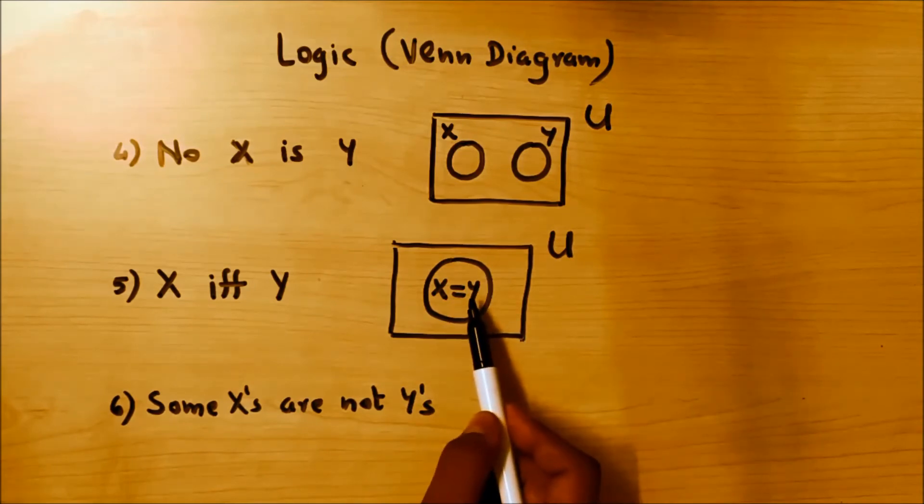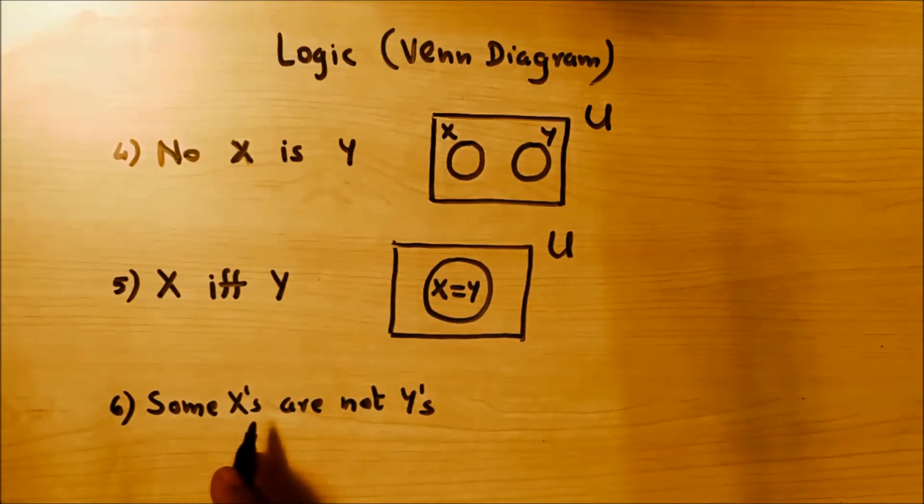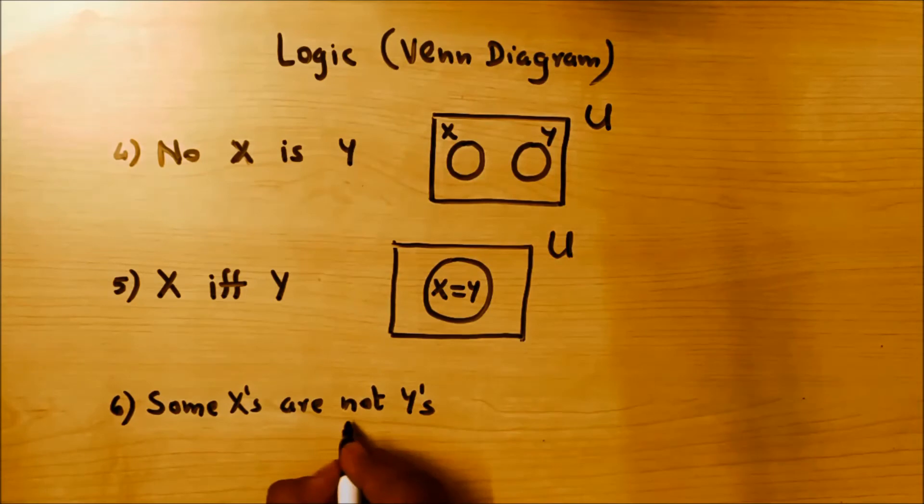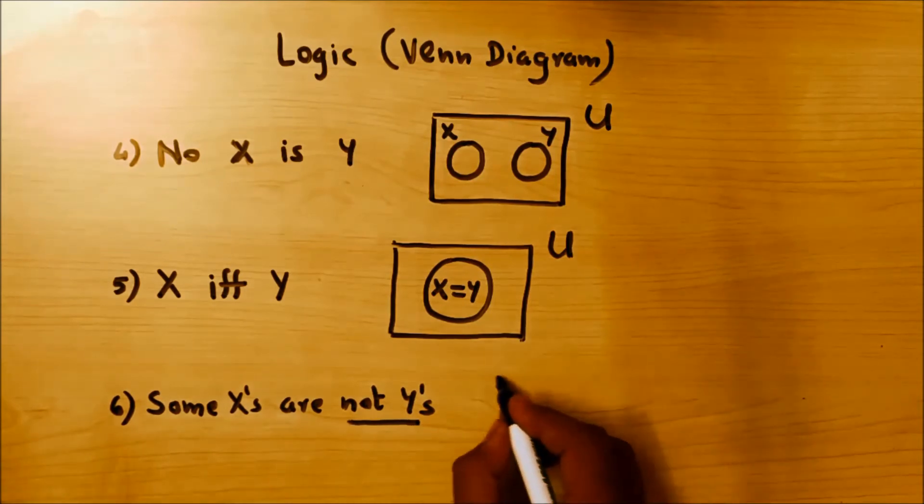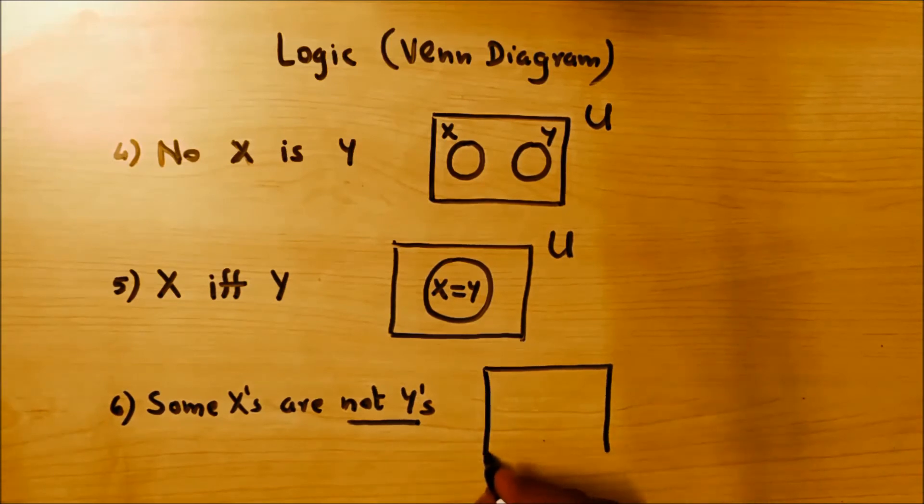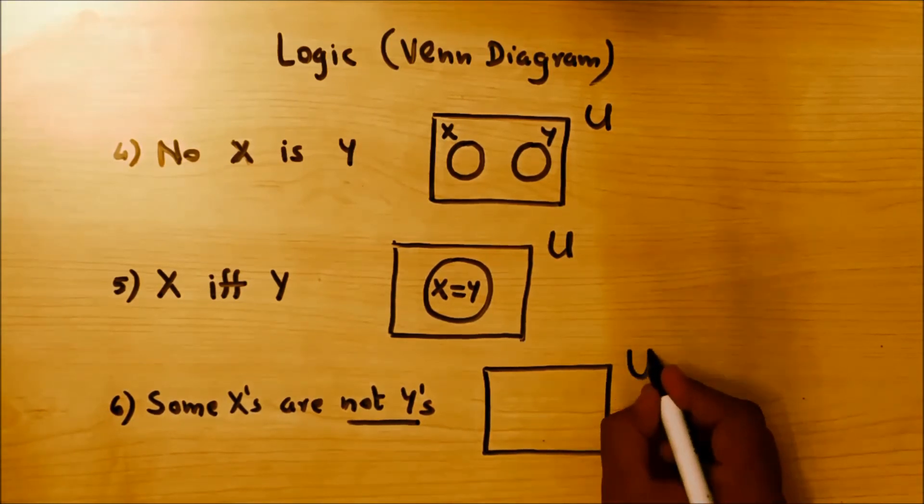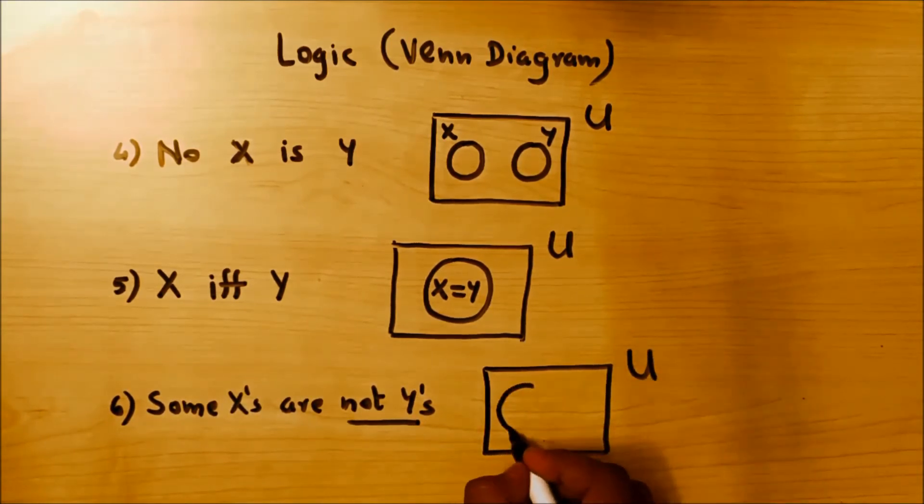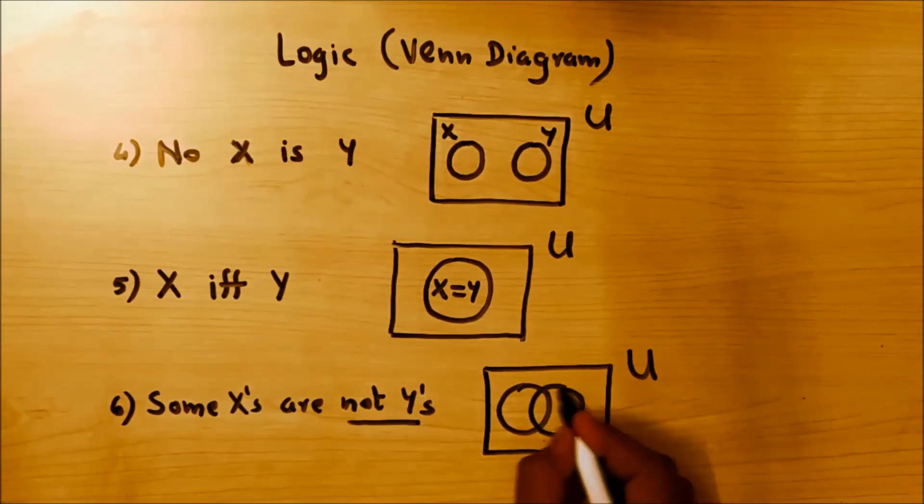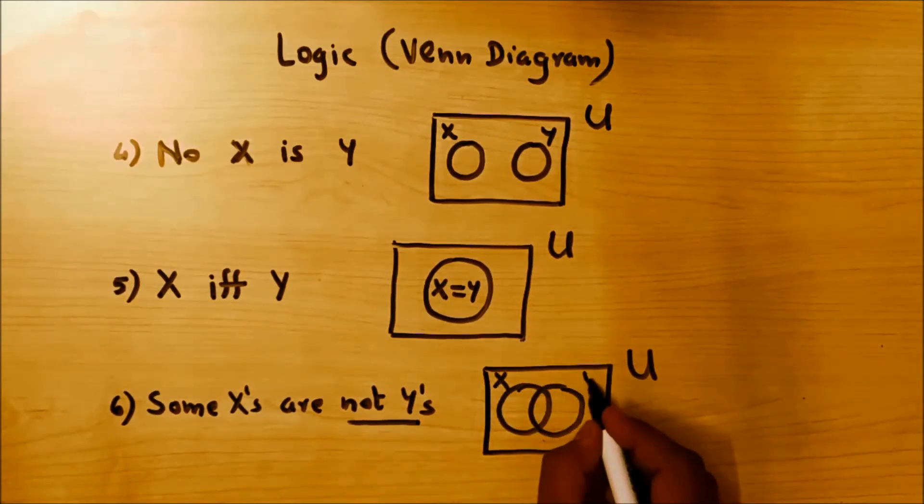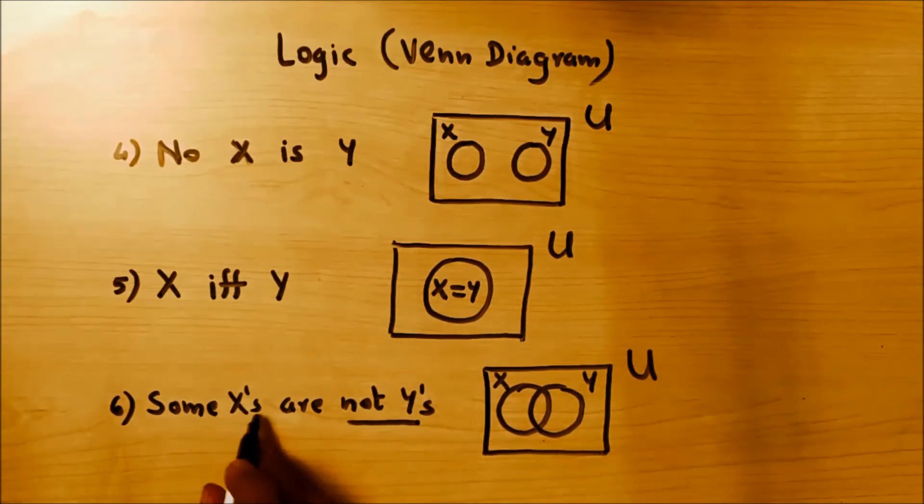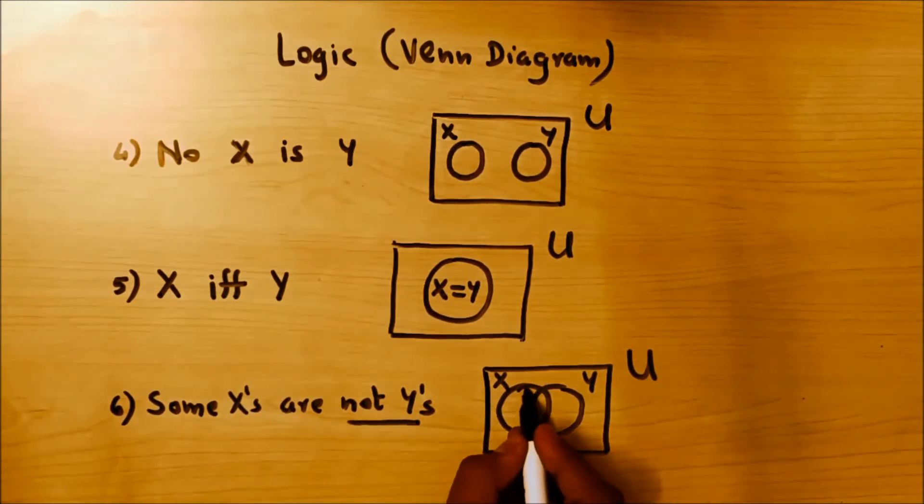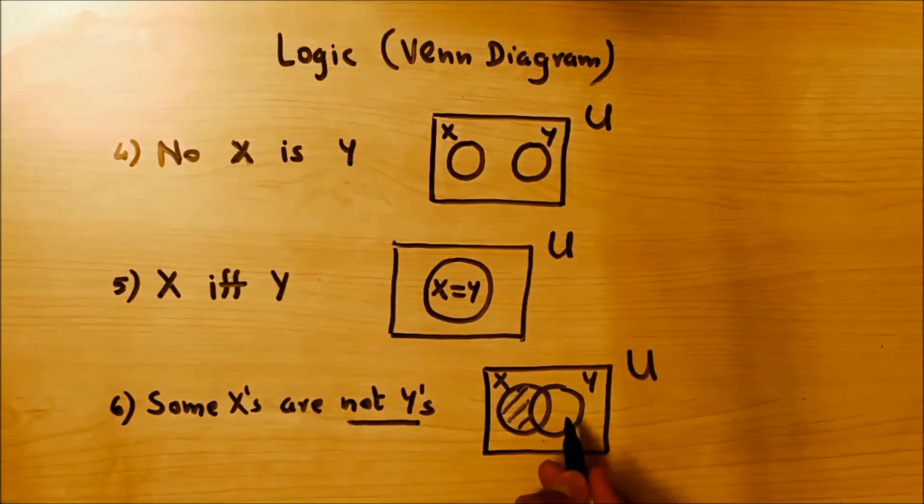Last one is some X's are not Y's. Now we know that for 'some' we have intersection. Again you have the universal set, then you have set X, then you have set Y. Please mark the area very carefully—we have to indicate some X's are not Y's. So this is the required region. These X's are not Y's.